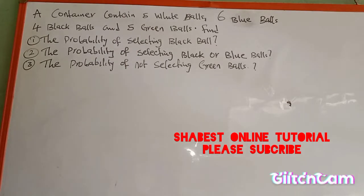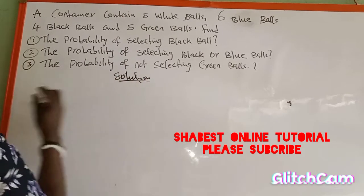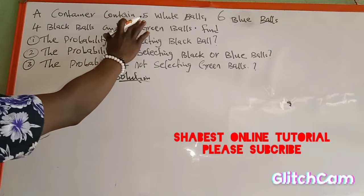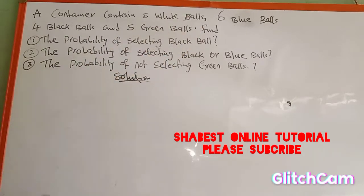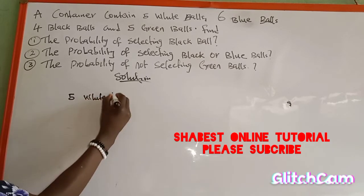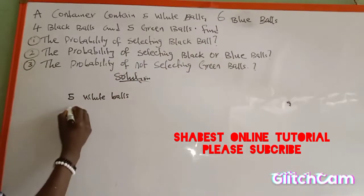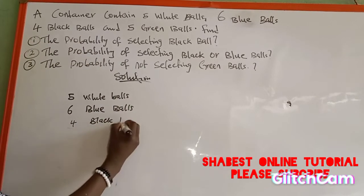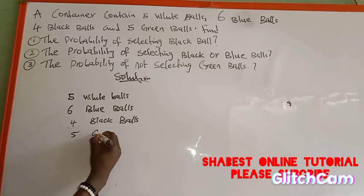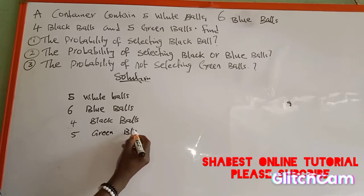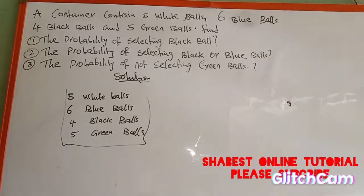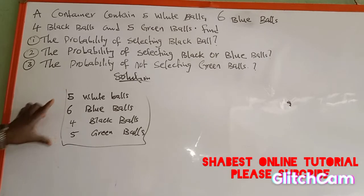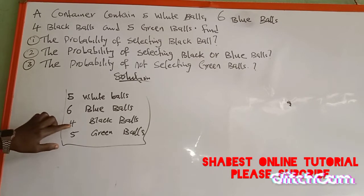We are going to provide a solution to these three sub-questions. First, inside the container we have five white balls, six blue balls, four black balls, and five green balls. The total number of balls in the container is five plus six equals eleven, eleven plus four is fifteen, fifteen plus five is twenty. So we have twenty balls in this container.